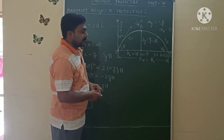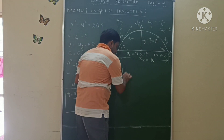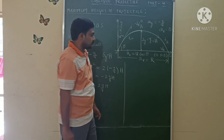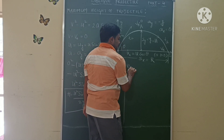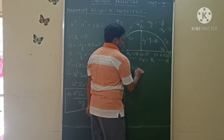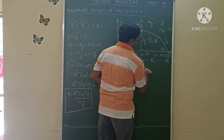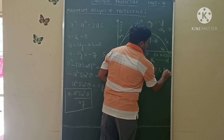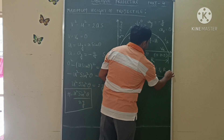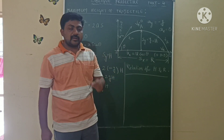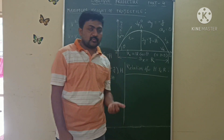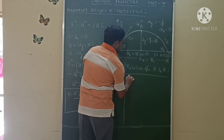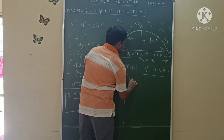There is a relation between range and maximum height. The range equation was already derived in the previous video, so you can watch that. Here I will find the relation between height H and range R.